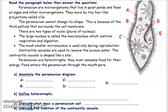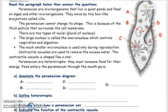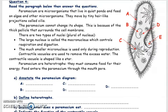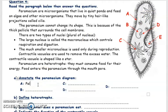The last question is about paramecium, which is a microorganism. Paramecium are microorganisms that live in quiet water and feed on algae and other microorganisms. They move by tiny hair-like projections called cilia. While reading this paragraph, I will start annotating and answering the first part of this question. The paramecium cannot change its shape because of the thick pellicle that surrounds the cell membrane. So A is pointing to the pellicle.